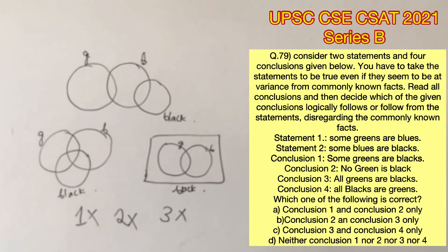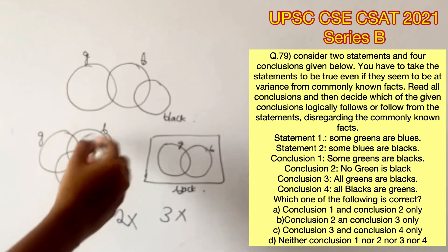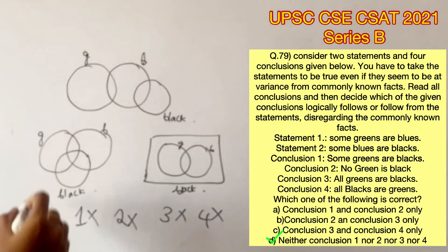Conclusion 4 says all blacks are greens, which can also only be one possibility. It's not true in all the cases. Therefore, none of the conclusions follow. So, option D is the right answer.